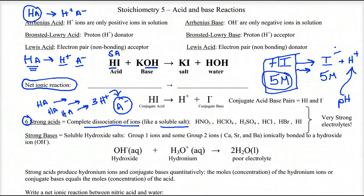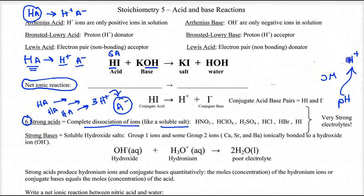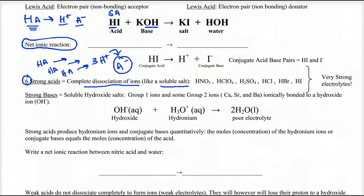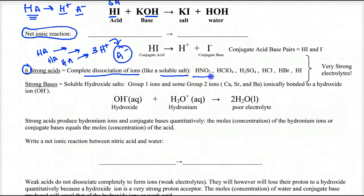We'll get to equilibrium later in the year. Right now we're talking about complete dissociation for strong acids and strong bases. Let's look at the strong acids. Hydrogen nitrate, otherwise called nitric acid — the '-ate' becomes '-ic,' so this is nitric acid. Notice the conjugate base is the nitrate ion, which is very soluble. Nitrate ions are always soluble, so the nitrate ion is not going to reattach itself to the proton to reform the acid.